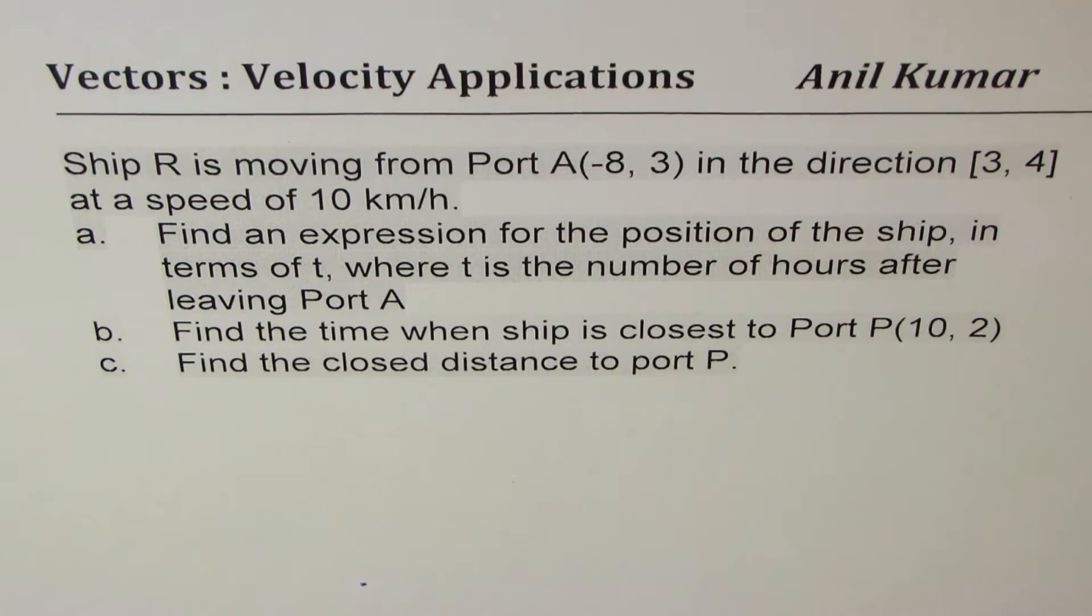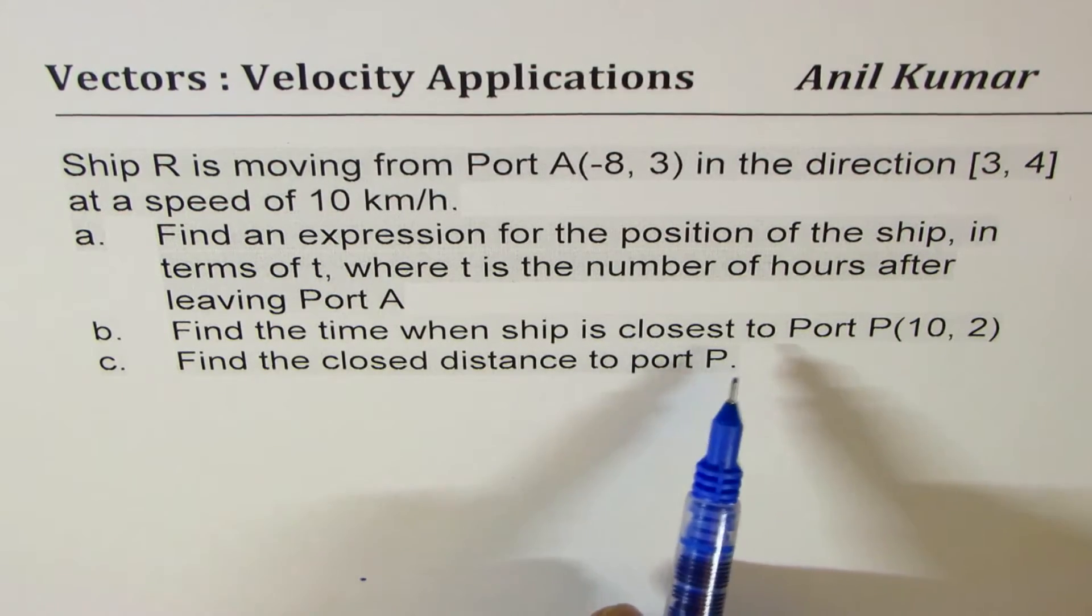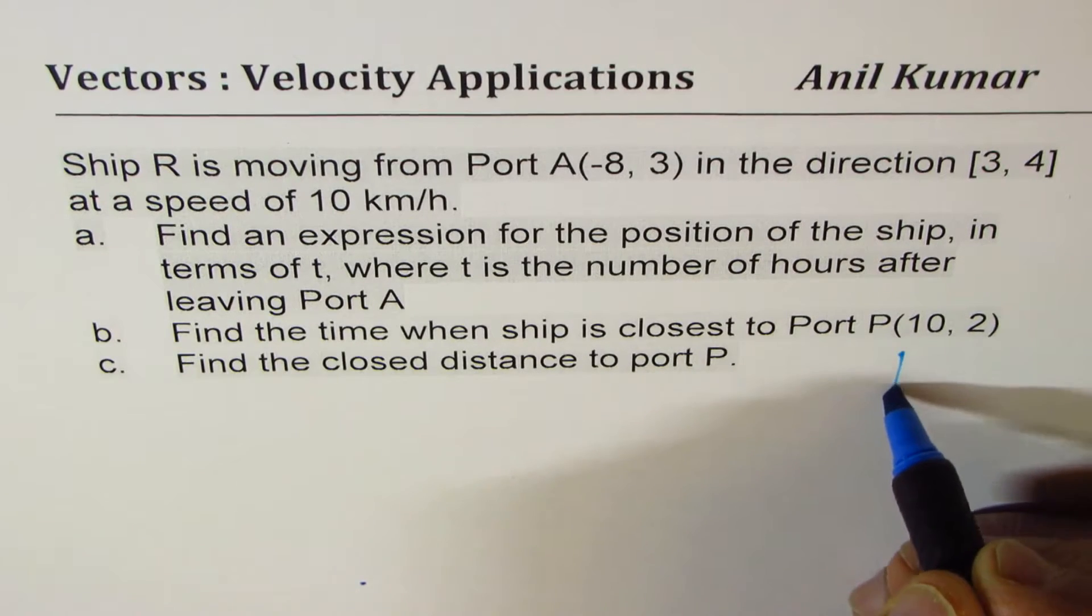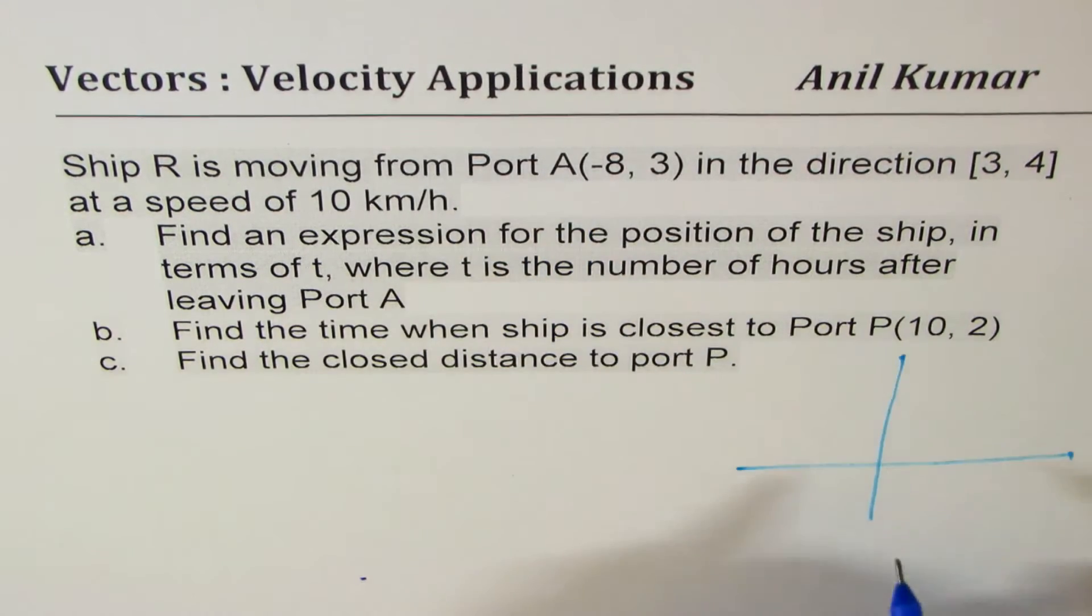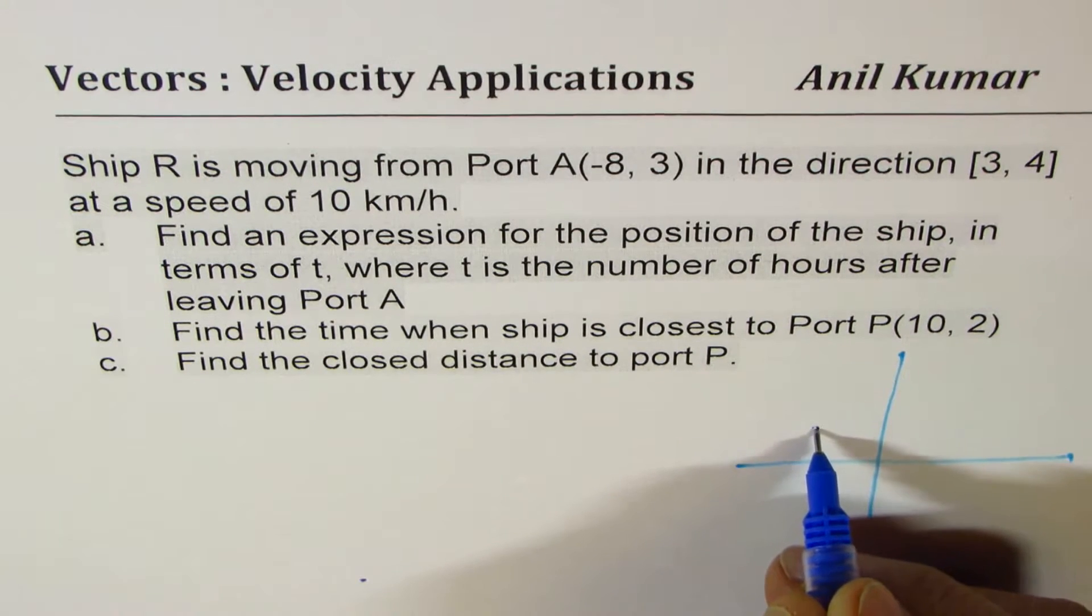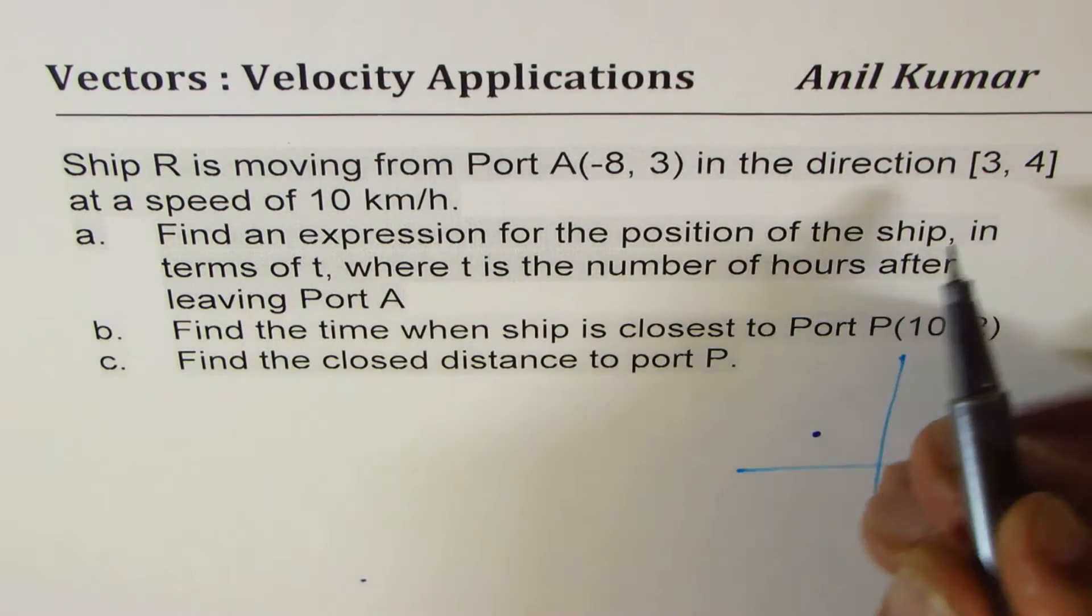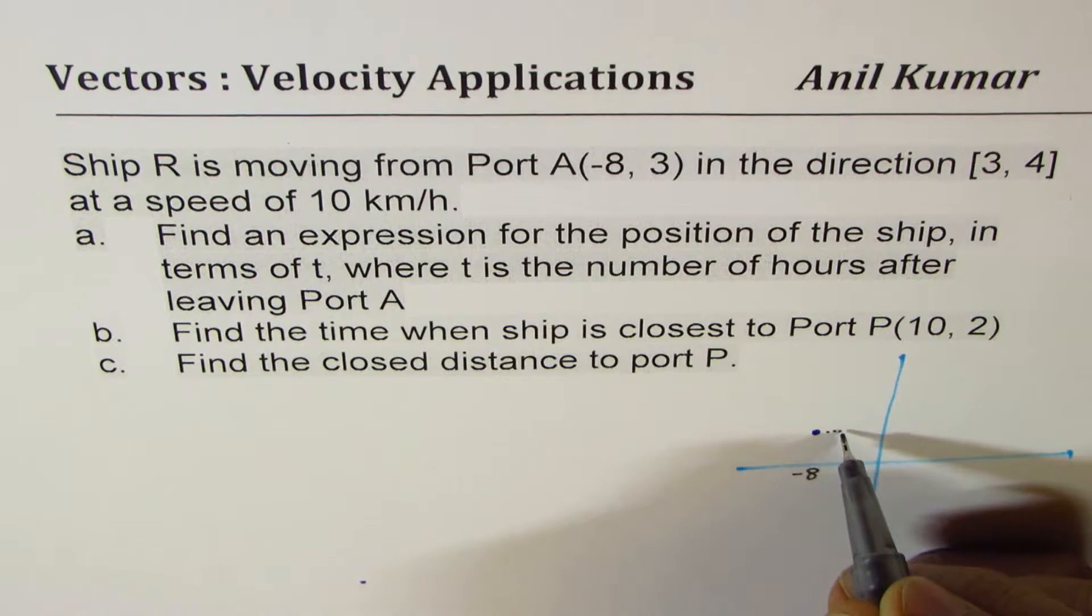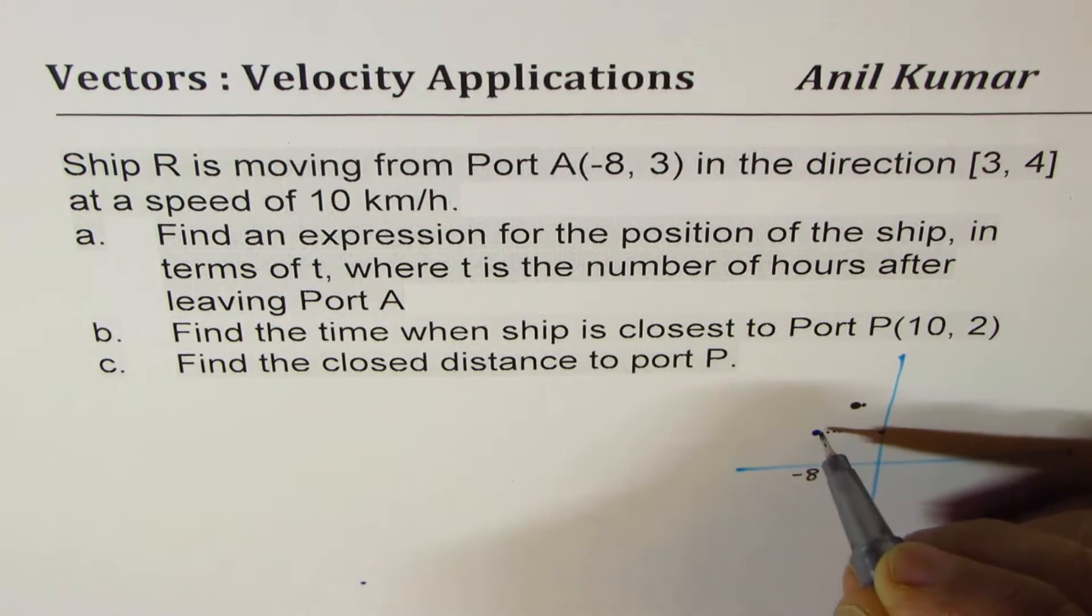Let's try to understand what this position vector is, and then we'll see how speed and velocity are related. And we'll also see how to find the closest time and distance. So what we are given here is, it's good to make a sketch and then we'll discuss it further. Let's say there's a coordinate plane. We are given Port A at (-8, 3). So let's say, minus 8 somewhere here, and 3 somewhere there. So we are given Port A kind of here. And the ship is moving in the direction [3, 4].